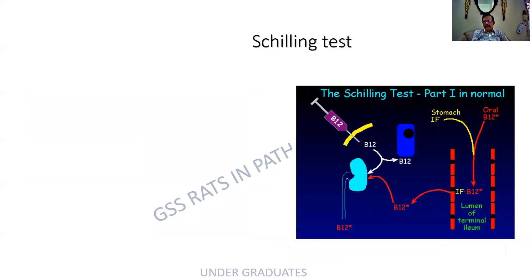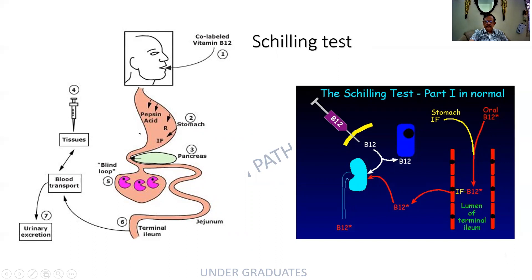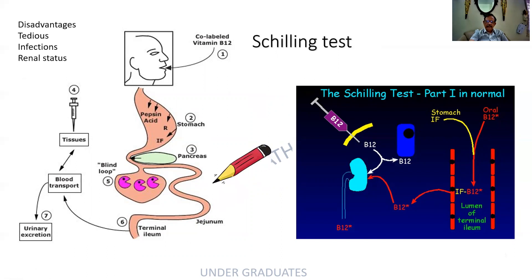The Schilling's test: the patient is given radiolabeled B12. If the patient has adequate intrinsic factor, absorption is proper. The patient is also given a large bolus of B12 which will flush out the radiolabeled B12 in a normal patient, but it will be excreted in a case of B12 deficiency or pernicious anemia. Causes include blind loop syndrome, increased infection, pancreatitis, etc. The disadvantage of the Schilling's test is that it is tedious, infections have to be treated, and renal status must also be normal.